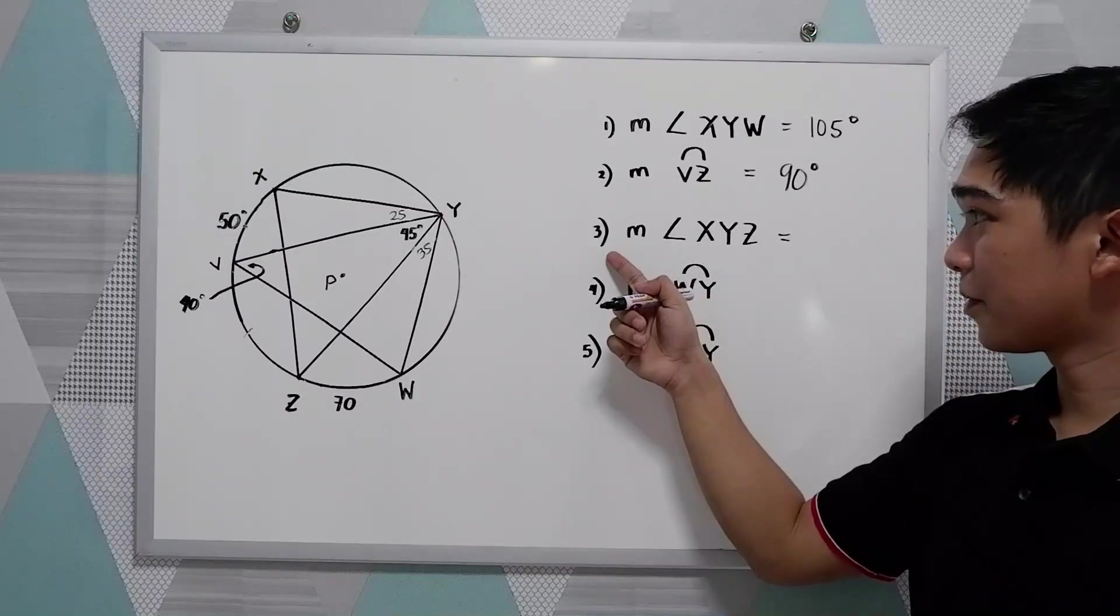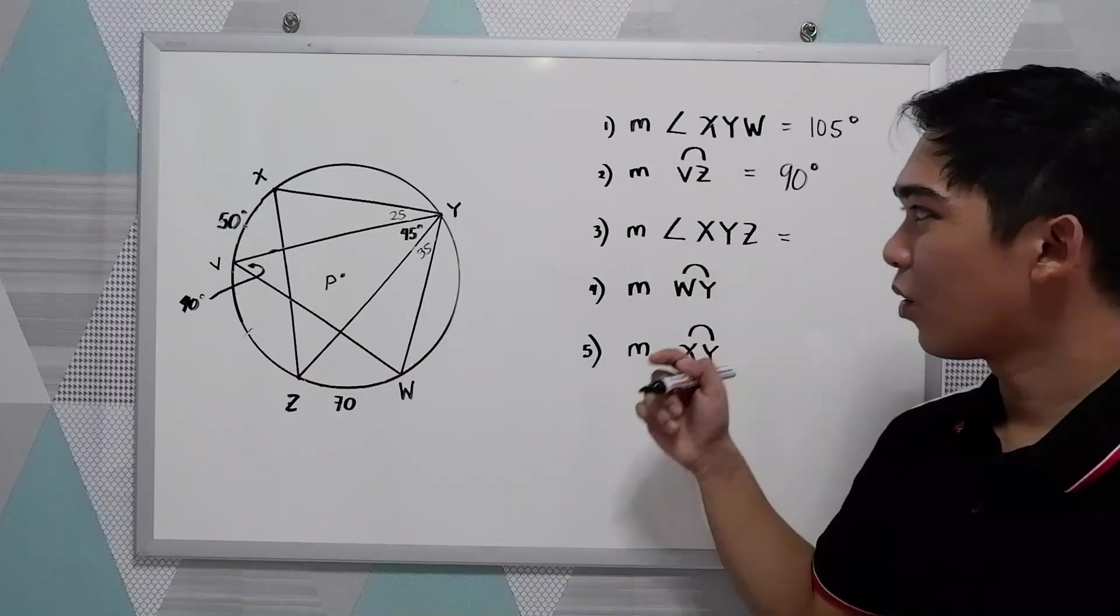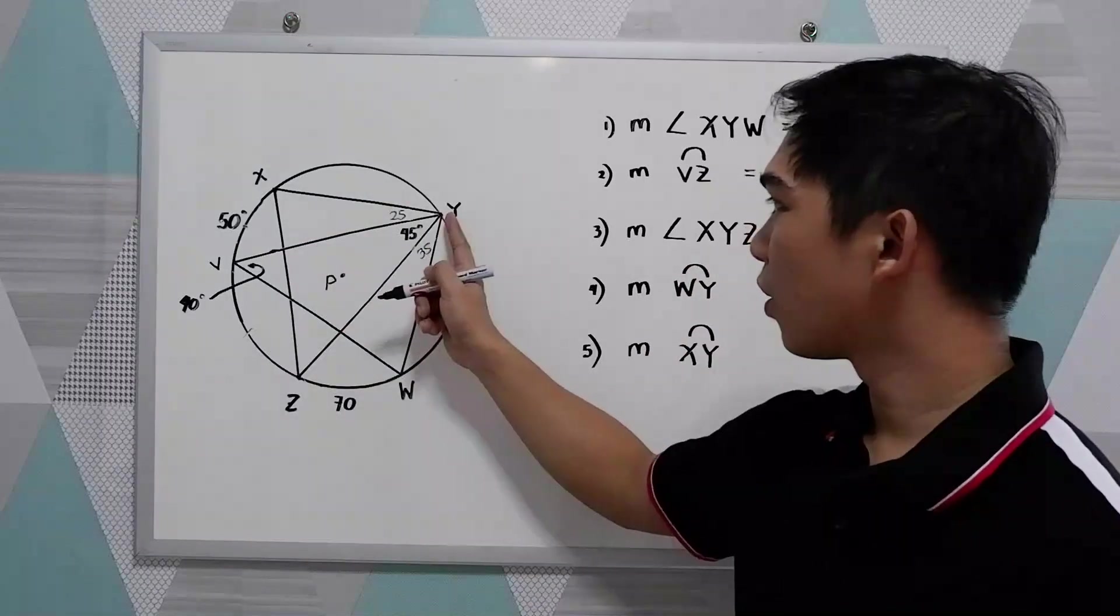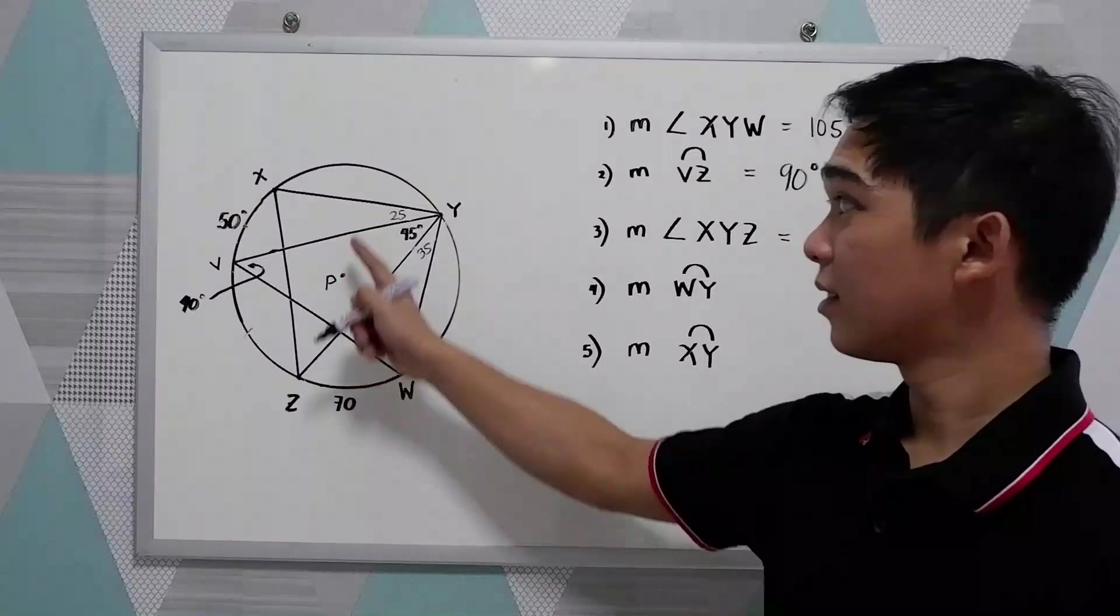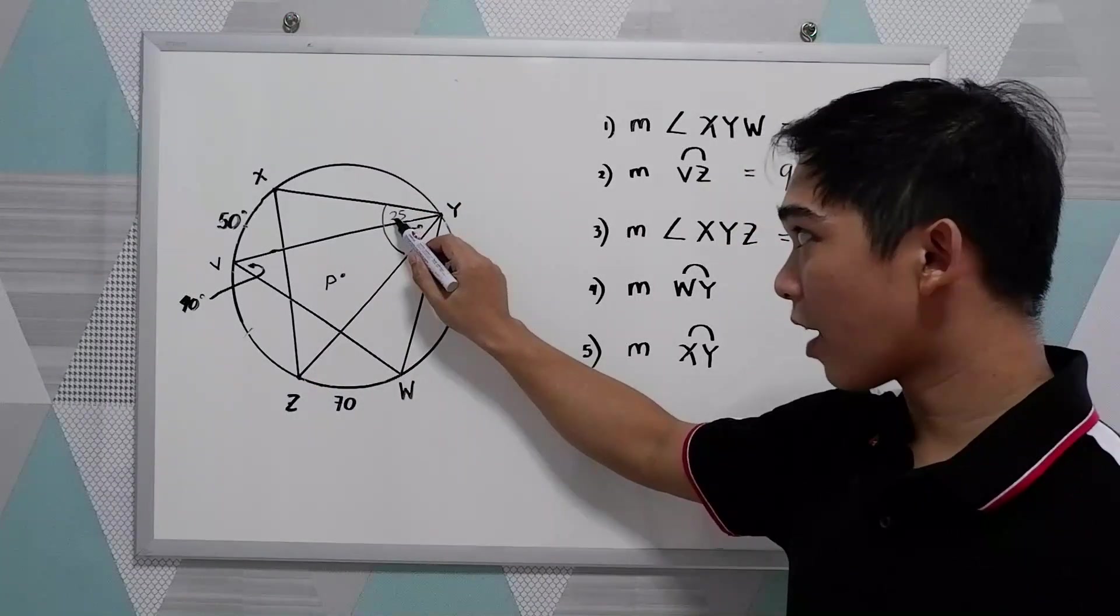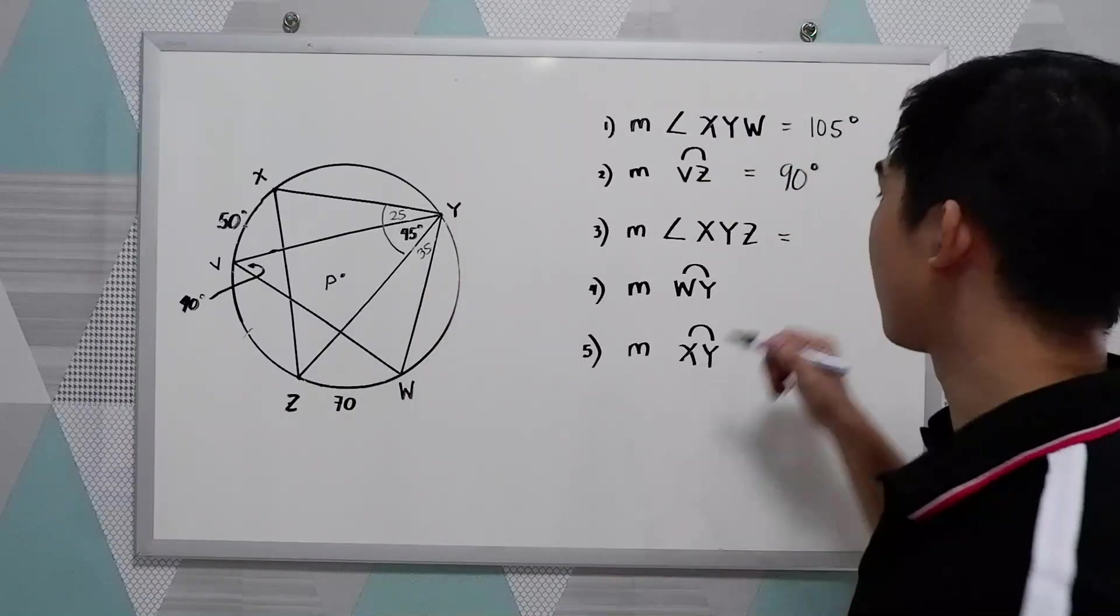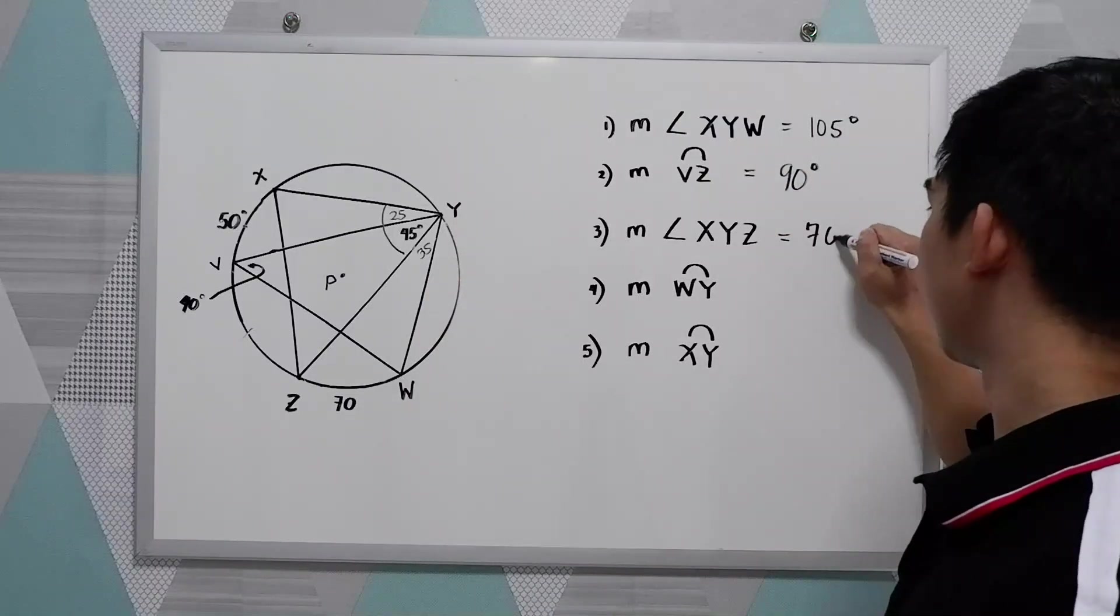Next, number 3. Measure angle X-Y-Z. Where is X-Y-Z? This angle. So, we have 25 plus 45, that is 70 degrees.